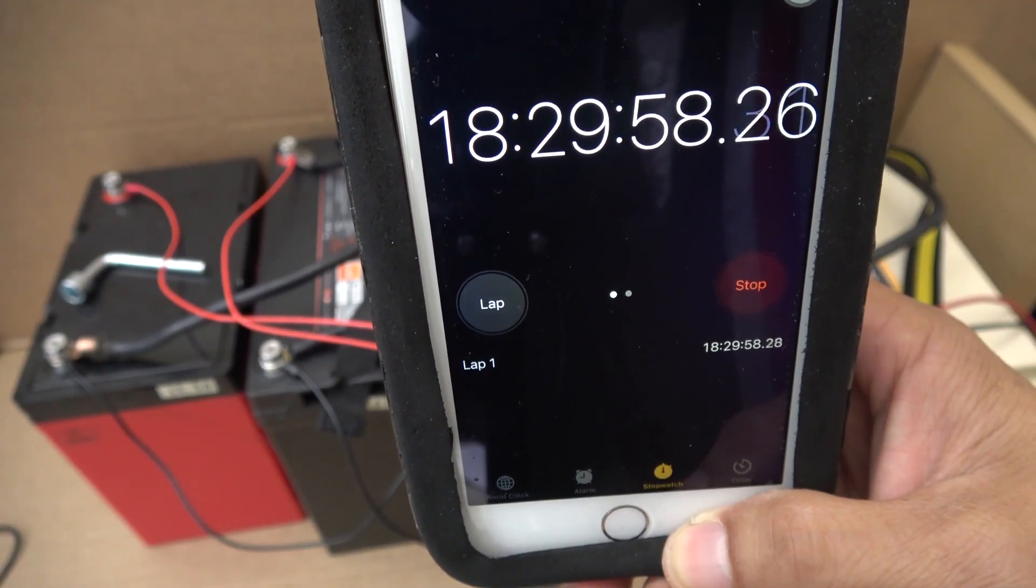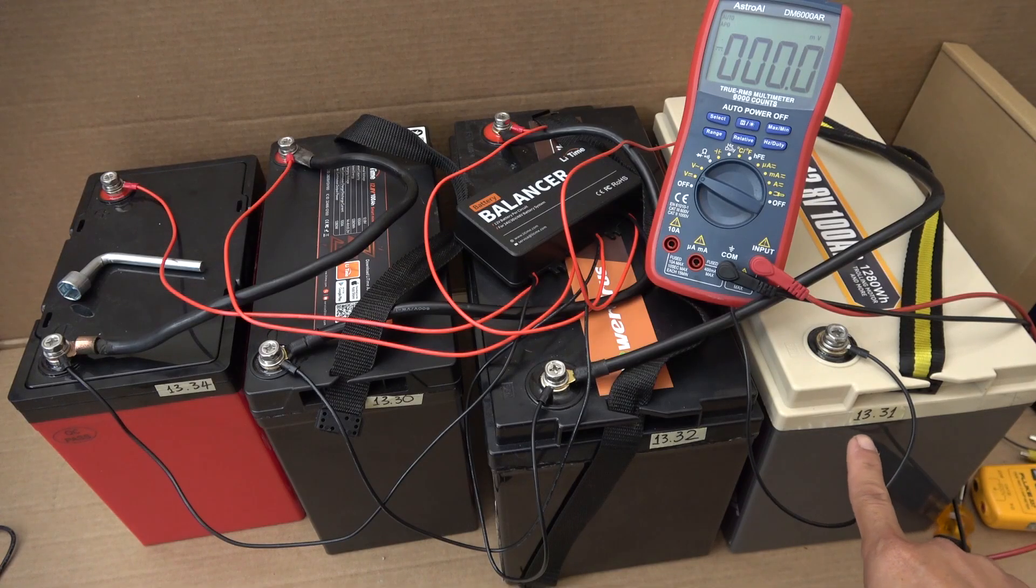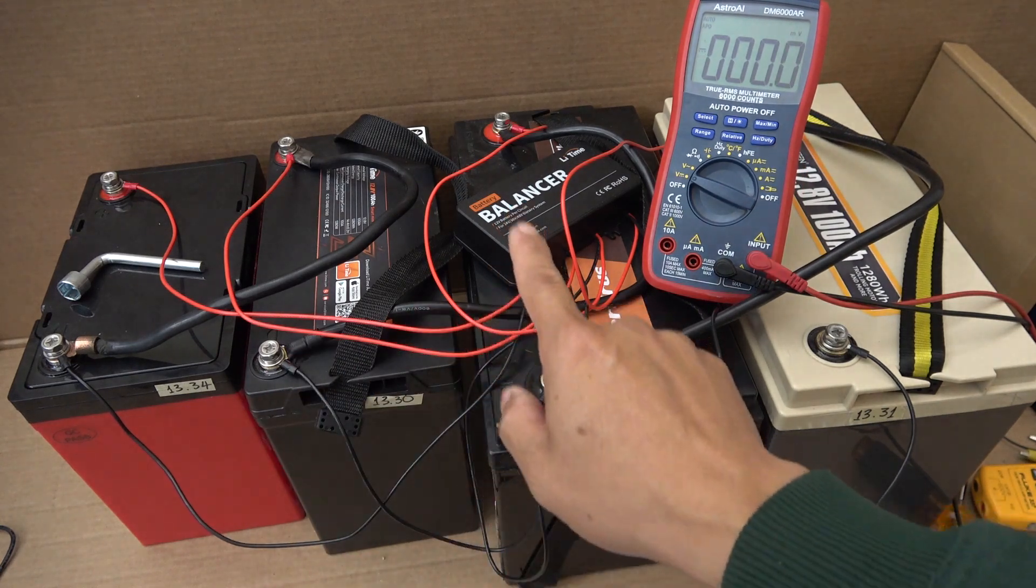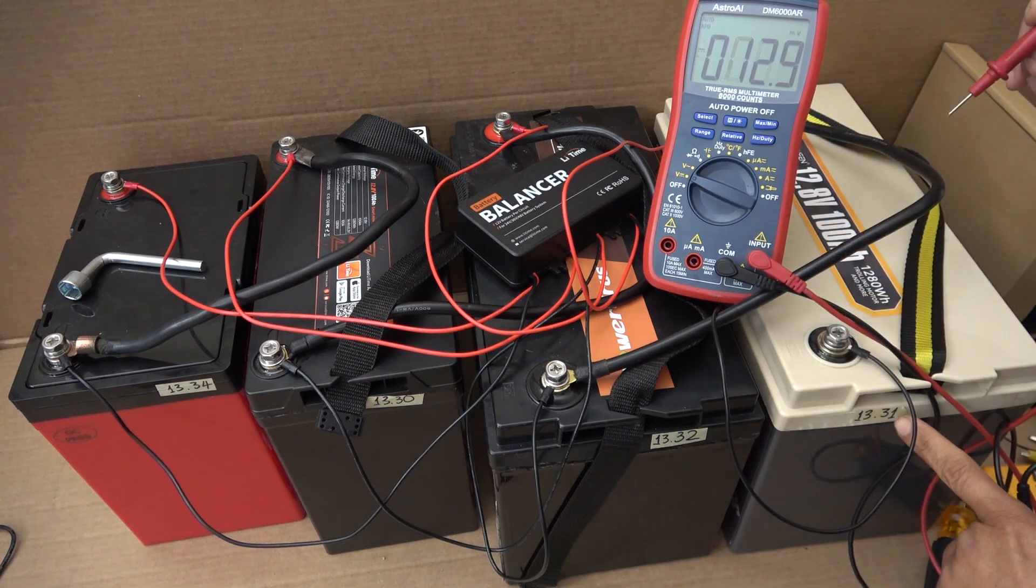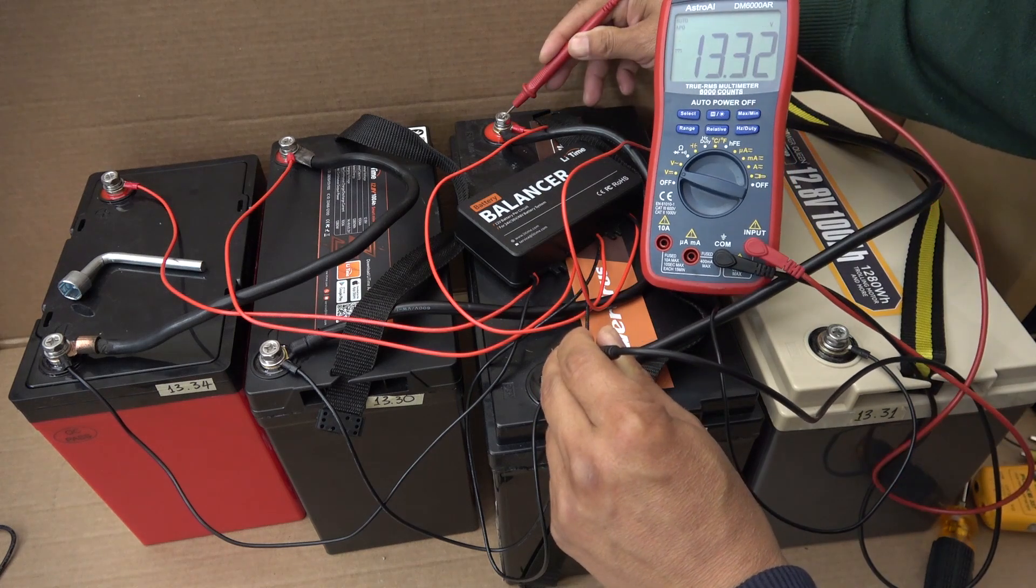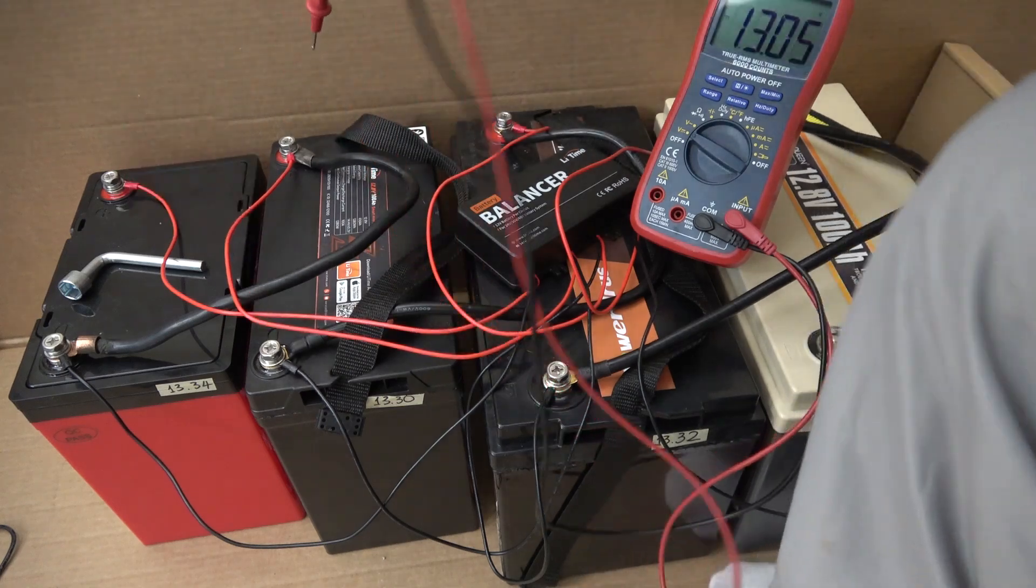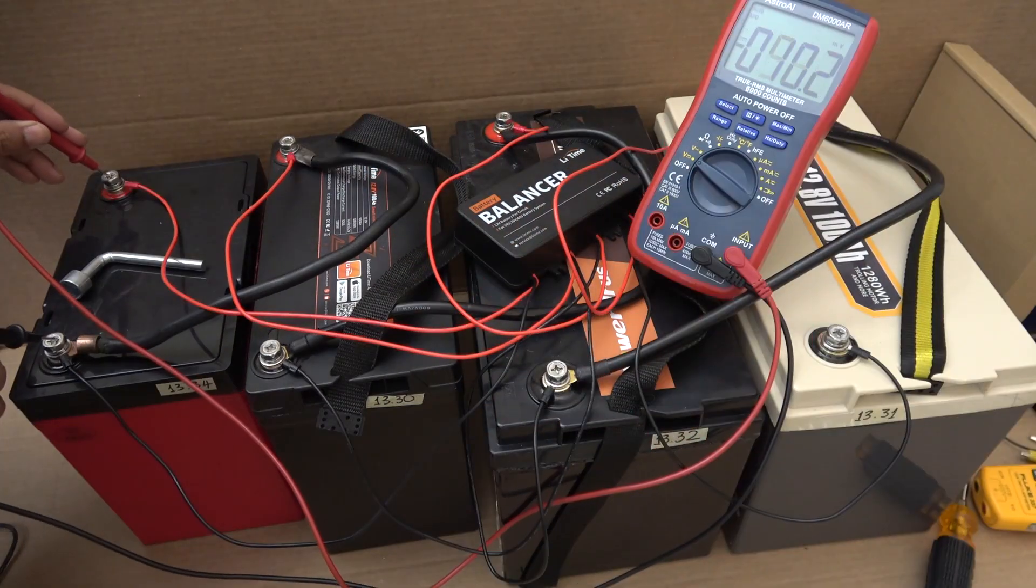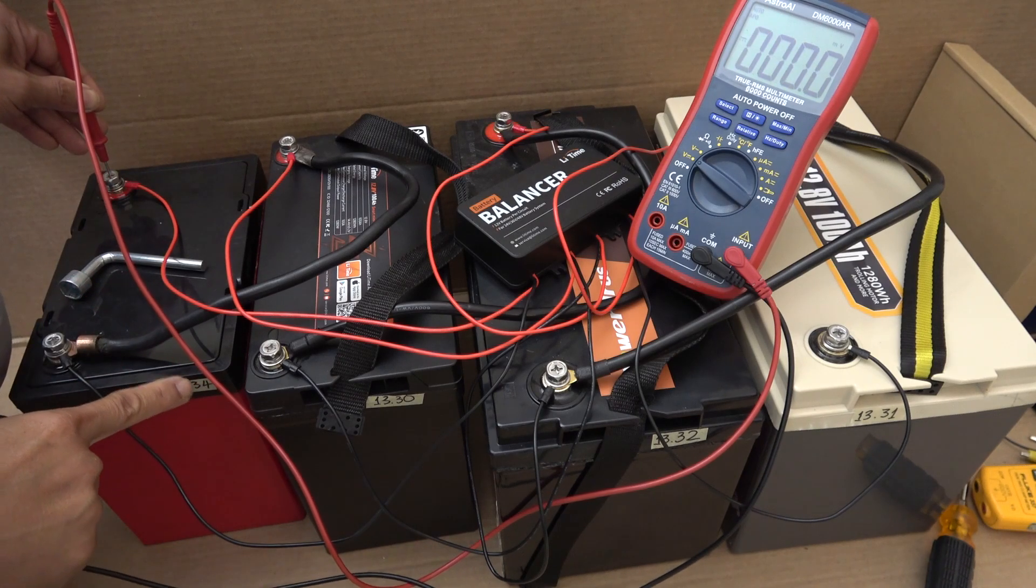It has been about 18 and a half hours. Let's see what we got. I have written down the original voltage of these batteries before I installed the balancer. Let's see what we got now. 13.32, so that's 0.01 volts increase. 13.32, so that's the same voltage. 13.32, so that is an increase of 0.02. And finally, 13.33, so that is a decrease of 0.01 volts.